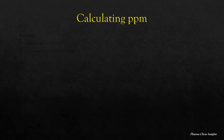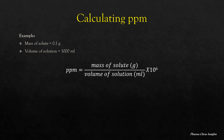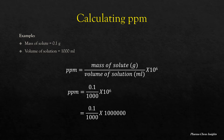Let us see with an example how to calculate PPM. Given data: mass of solute is equal to 0.1 gram, volume of solution is equal to 1000 ml. According to the formula, PPM equals mass of solute in grams divided by volume of solution in ml, into 10 to the power 6. That is 0.1 divided by 1000, into 10 to the power 6. By calculating, we get 100 PPM.